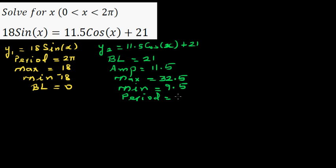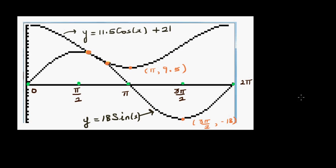I've already used a graphic calculator to draw that. This is y1 (the sine graph) and this is y2 (the cosine graph: 11.5 cos x + 21). The question is: where do these graphs intersect? From this you can see the answer is between 0 and π (3.14). Understanding this graphically helps you understand the algebra behind it.